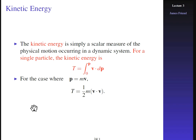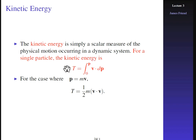For a single particle, the kinetic energy is given in terms of the momentum — this is strictly speaking the actual definition. It's the velocity of the particle dot-producted with the infinitesimal momentum, integrated from when the particle has no momentum to when it has momentum P. For the non-relativistic, non-quantum case where momentum is just MV, this simplifies to one-half M times V·V.